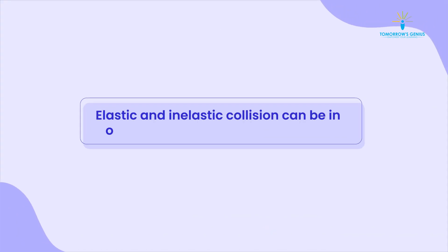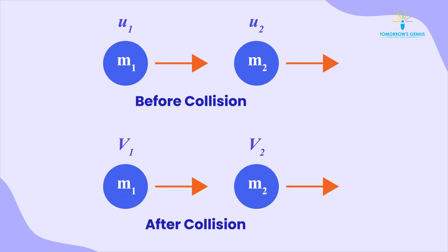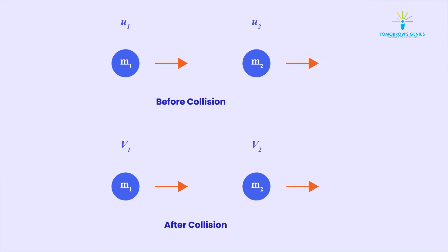Elastic and inelastic collision can occur in one dimension and two dimensions. Collision is said to be one-dimensional if the colliding particles move along the same straight line path both before as well as after the collision.